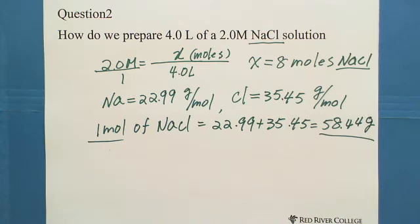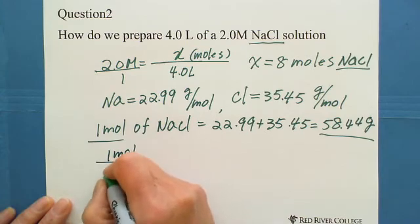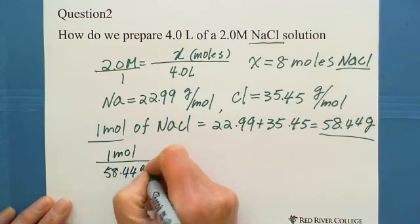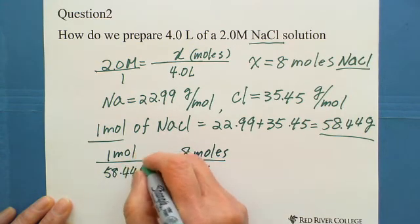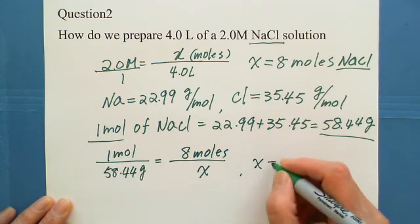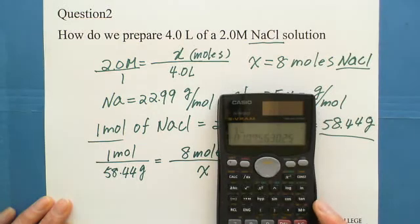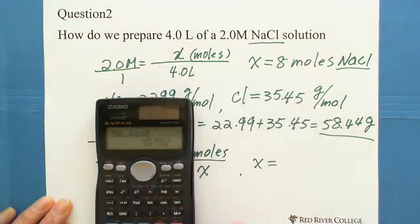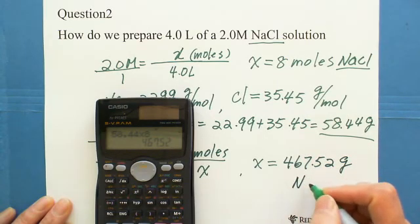Now we need 8 moles and how many grams. We still need to set up ratio proportion. You can say 1 mole over 58.44 grams. Now we have 8 moles and how many grams. Cross multiplication. You got X equals to, because this is 1, just multiply these two numbers. We can use 58.44 times 8. You got 467.52. You weigh 467.52 grams of sodium chloride.